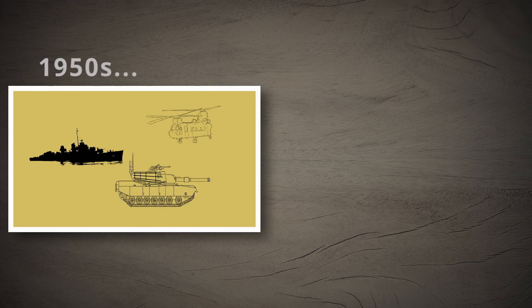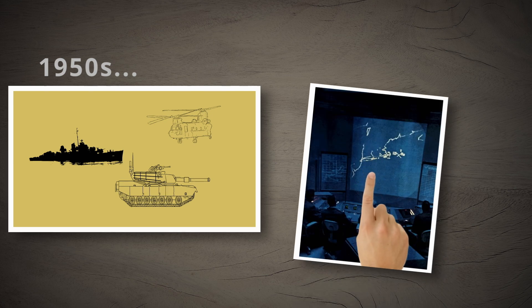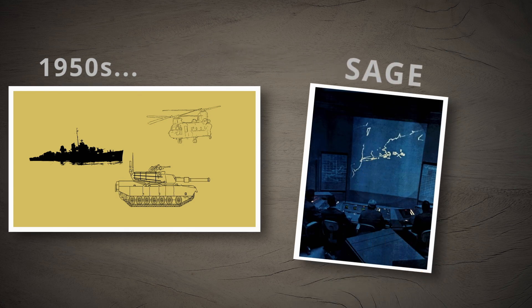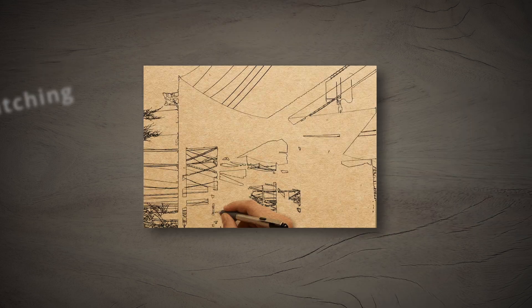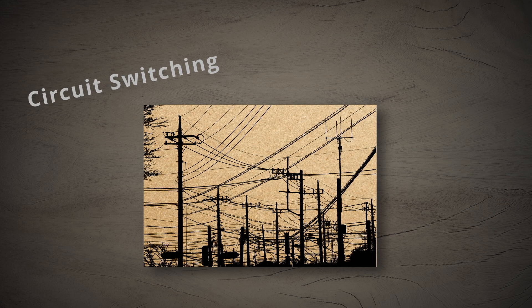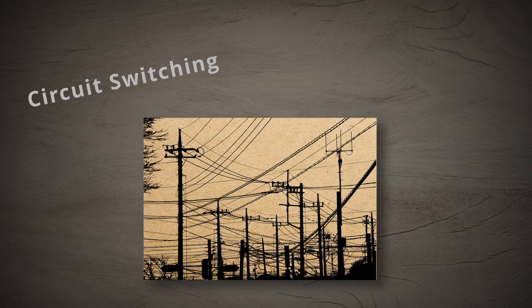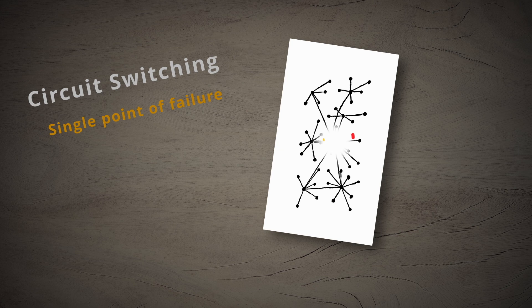In the 1950s, as Cold War tension rose, the U.S. Air Force built SAGE, a computer network for its radar system. The core design for SAGE was circuit switching, the same format used by the nation's communication systems at the time.